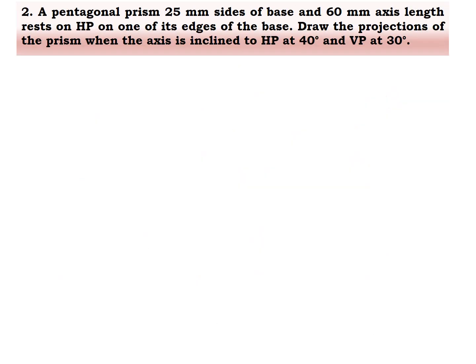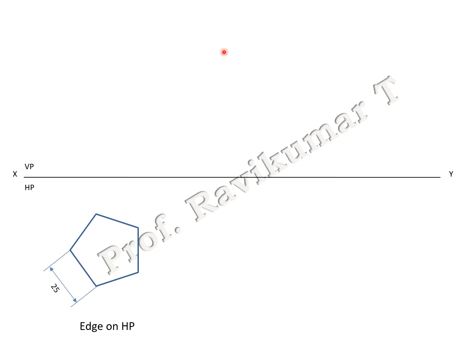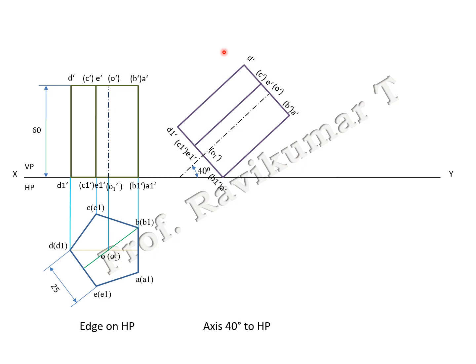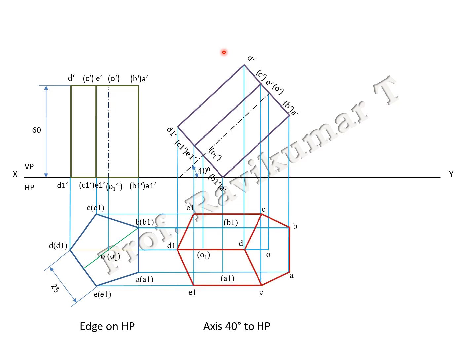The next problem has the same 25 mm sides and 60 mm axis length, resting on HP on one edge of the base. Draw the projection when axis is inclined to both VP and HP. When the axis is inclined to both planes, we call it a locus problem. The word 'appears' is not present here, so it is a locus problem and it is an edge condition. The first and second positions are the same as the previous problem, with edges towards your right hand side.